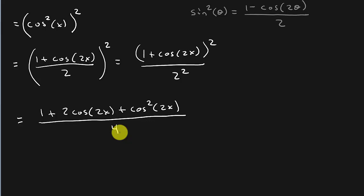All right, so how did I get that? Well, this right here, this numerator, remember 1 plus cosine 2x squared is the same thing as 1 plus cosine 2x times 1 plus cosine 2x. And then we just FOIL it. 1 times 1 is 1.